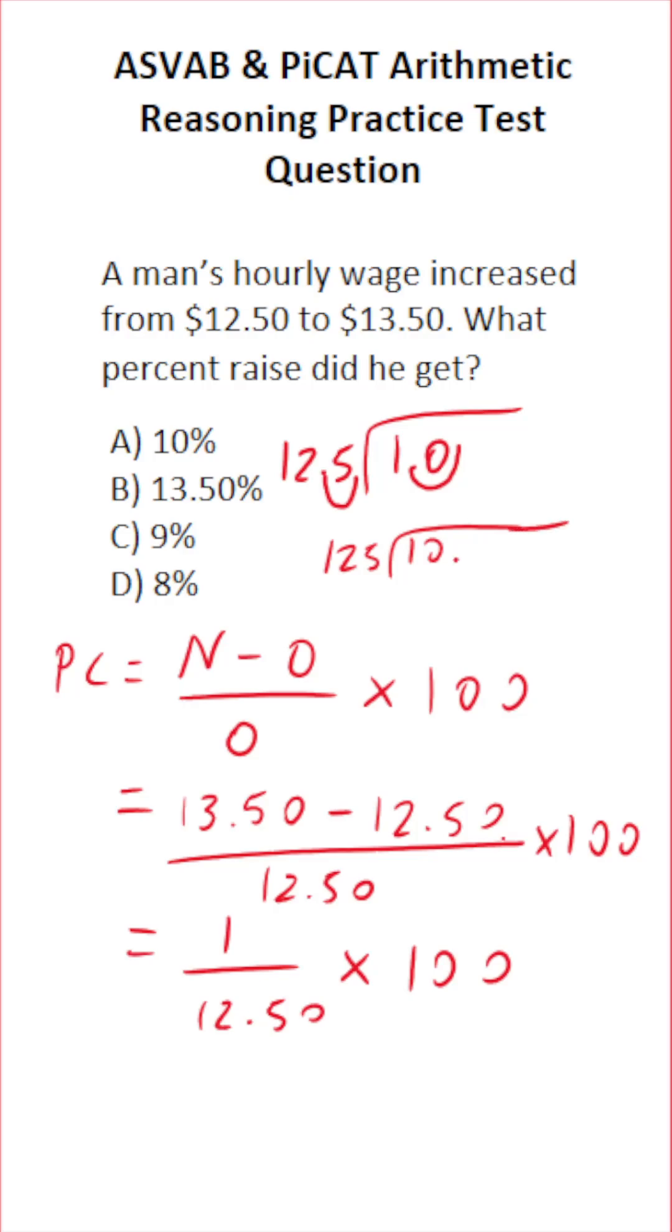Again, our decimal's right here. We know that 125 doesn't go into 10, so I'm gonna add a couple of zero placeholders. Again, 125 does not go into 10, so put a zero there. Does 125 go into 100? It doesn't, so bring your decimal up. Put a zero over 100. How many times does 125 go into 1,000? 125 times 8 is exactly 1,000, so we have no remainder there.